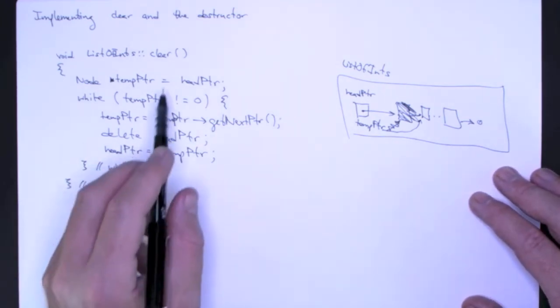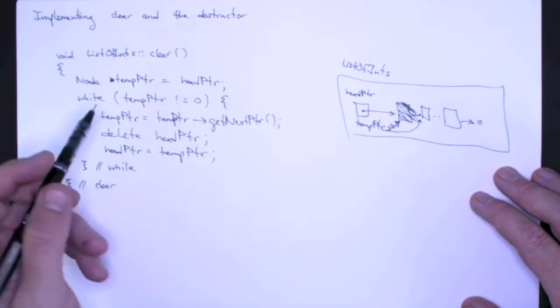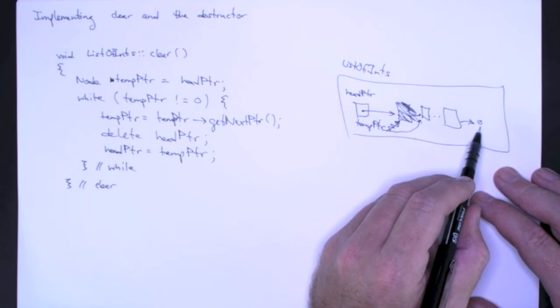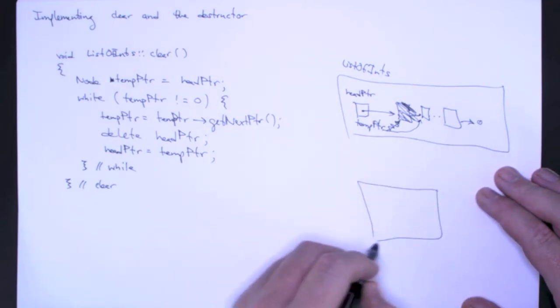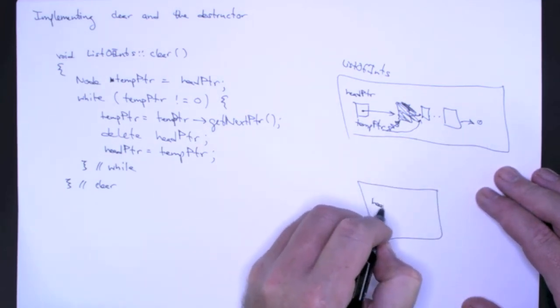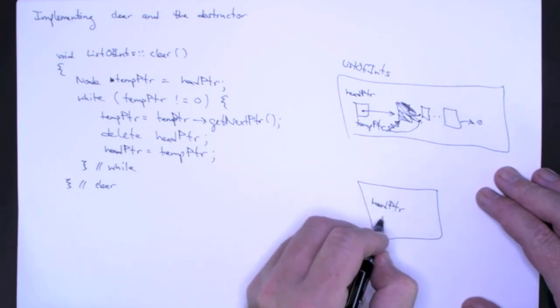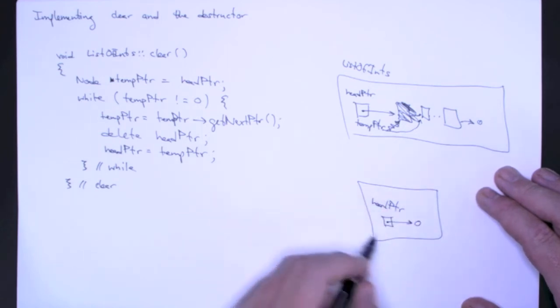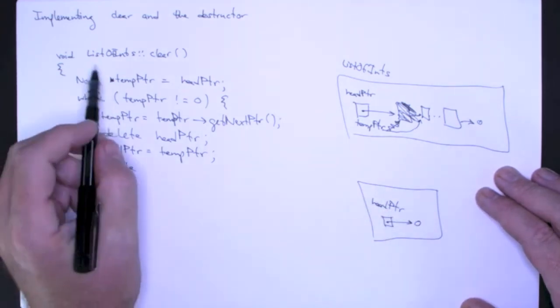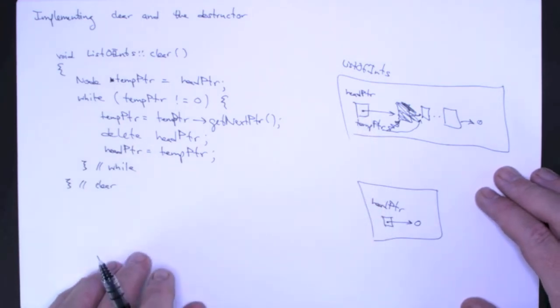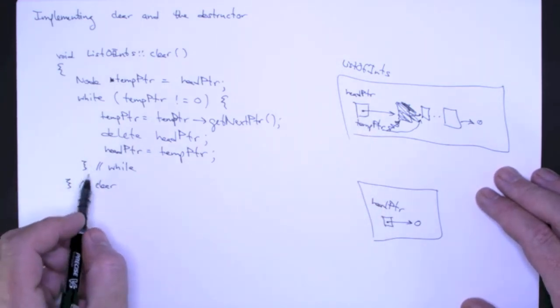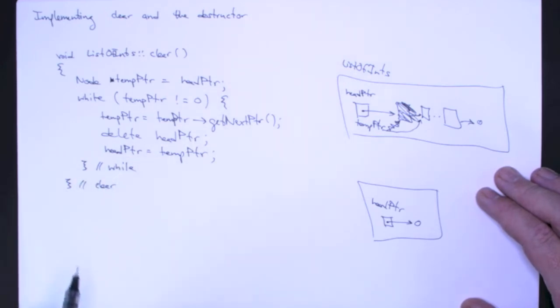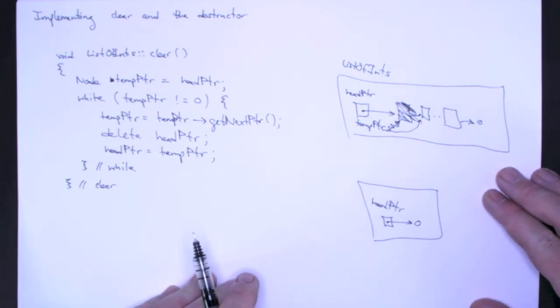Now an important point here with this clear method is look at what happens when I finally get to the end here. Keep in mind that when this clear method terminates, we want to take this list back to a default constructed state. That's what we want. This is what we want our list of ints object to look like after we have cleared it. So one question would be do I need to explicitly assign head pointer to null when this while loop terminates? And it turns out I don't.